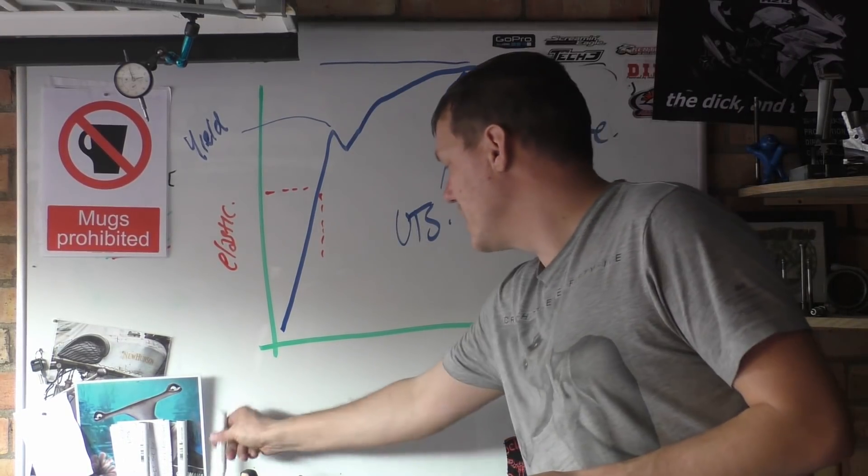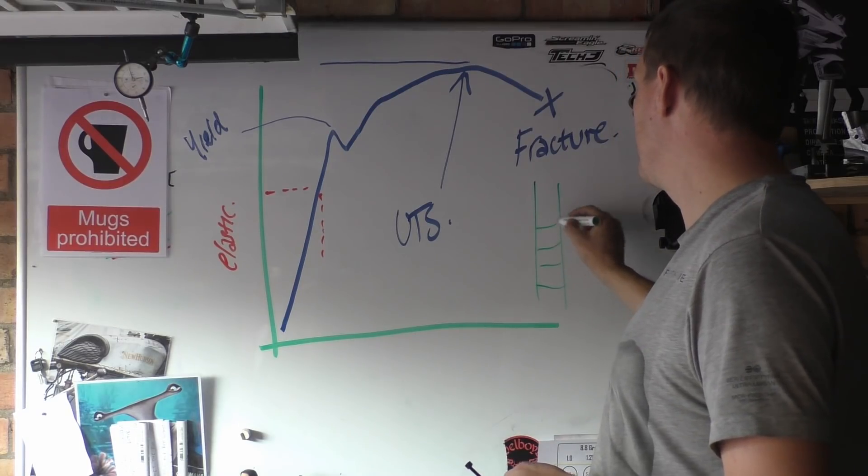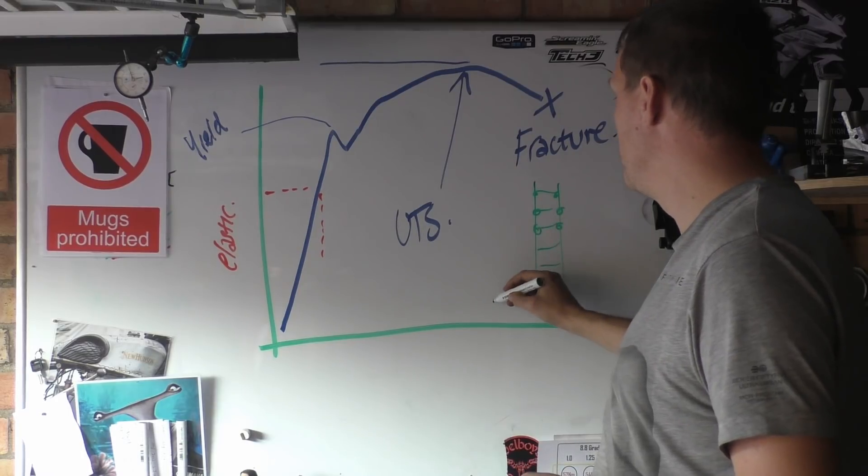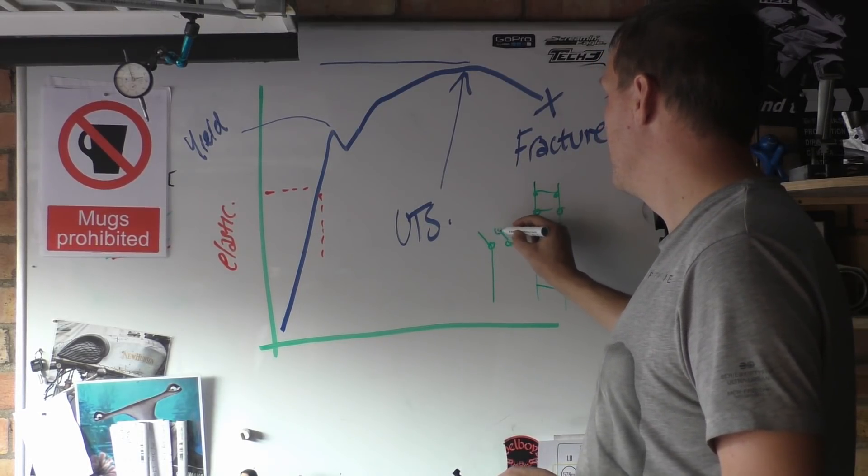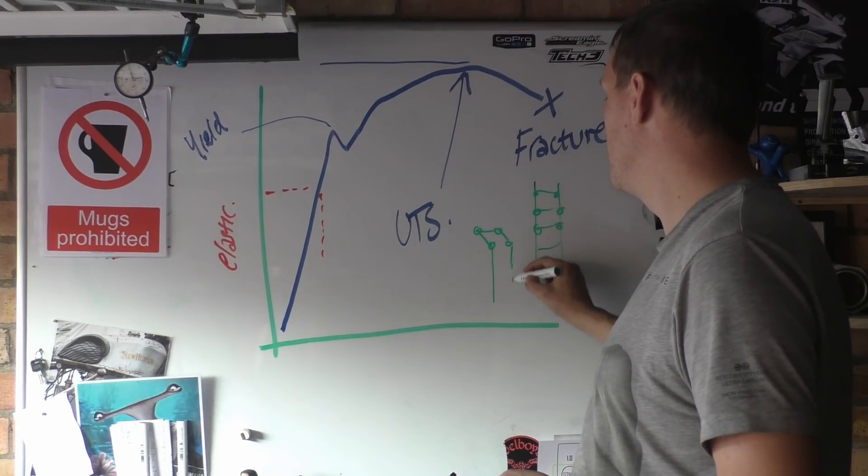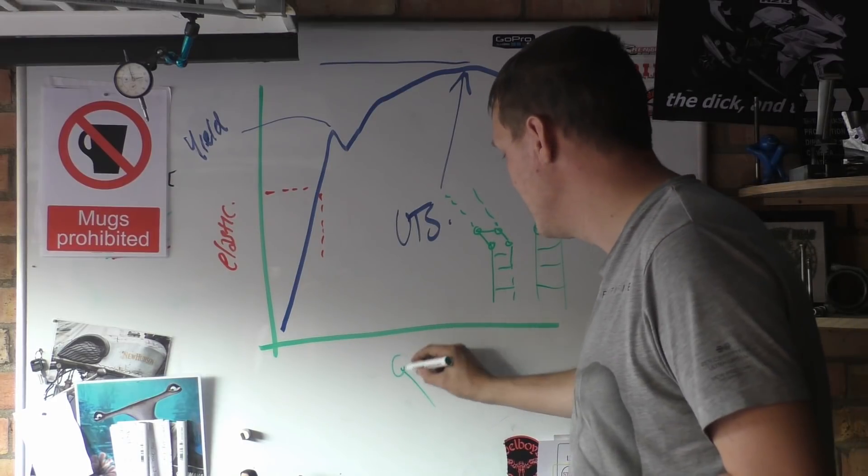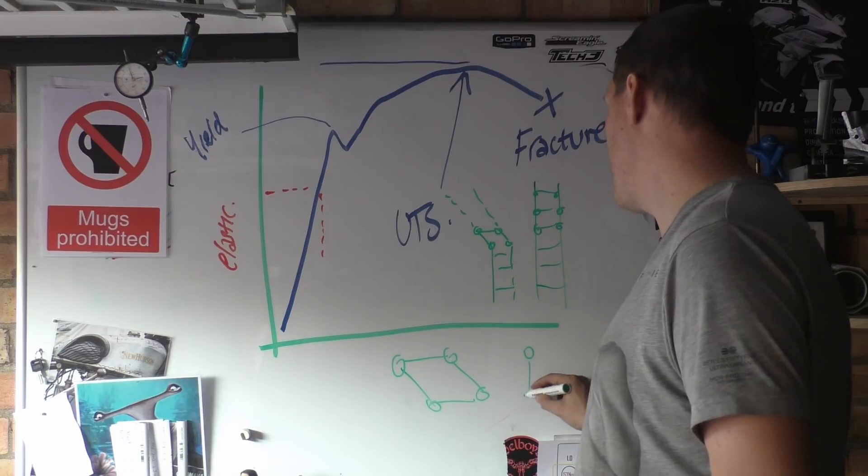So in a sense, you can think of your atomic structure like a ladder. All these little points here have atoms on, and then once you've bent it, in a sense these atoms are like this now. If you could separate that, you've now got a rhombus instead of a square.